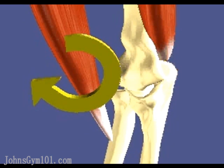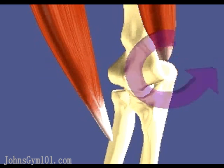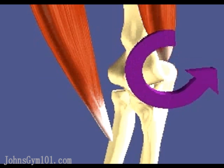Similarly, the triceps brachii crosses posterior to the elbow joint, inserting on the olecranon of the ulna. This insertion location results in extension torque and motion.